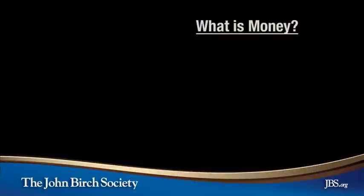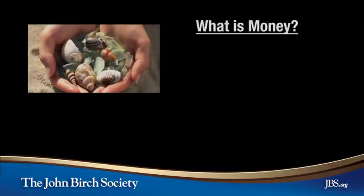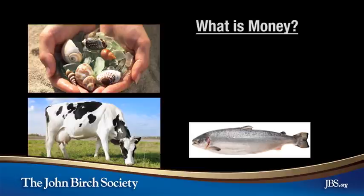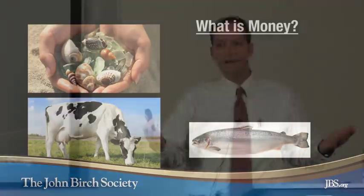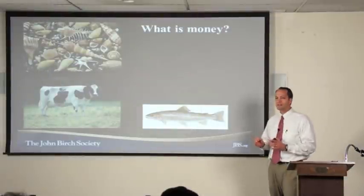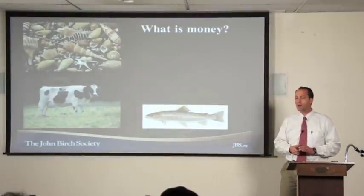So as we approach constitutional money, we adhere strictly to what the Constitution actually says, and it becomes very clear what our monetary policy is supposed to be. The first question: what is money? Throughout the history of mankind, many different things have been used as money — shells, cows, fish, salt. In fact, from the use of salt we get the term 'salary' and the phrase 'not worth his salt,' meaning not worth his pay.